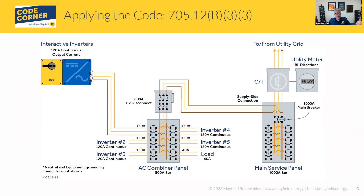What we have in this case is a commercial system with multiple — in this case five different inverters — and we're wanting to interconnect those. We see that we have a supply side connection, and for our interconnection to the utility. But what we're looking at here is this AC combiner panel. What this code section 705.12 B33 is saying is that the sum of the breakers — both source and loads — cannot exceed the bus bar rating. So if you look at all five inverters, the rating of those breakers is 150 amps each, so we have 750 amps of source in this case. We have a load showing 40 amps. Add all those together: 790 amps — we are under the 800 amp bus bar rating. We could actually have a 50 amp load and still be in compliance. So we can have up to 800 amps worth of breakers inside that panel.